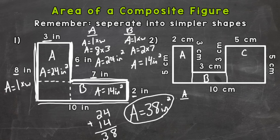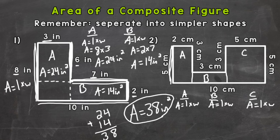Let's find the area of these three shapes. Area equals length times width — I'll put my formula first, and then we'll plug in. For A, our length is going to be this 5 all the way up, so we have 5 centimeters times the width of 2 centimeters, and that gives us an area of 10 square centimeters.